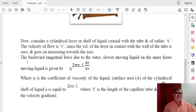The backward tangential force due to the outer slower moving liquid on the inner faster moving liquid is given by eta times 2πXL times dV/dX. Here, eta is the coefficient of viscosity of the liquid, and A is the surface area of the cylindrical shell of liquid equal to 2πXL, where L is the length of the capillary tube, and dV/dX is the velocity gradient. This shows Poiseuille's formula.